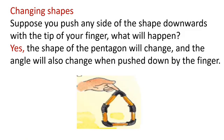Changing shapes. Make a pentagon, that is a five-sided polygon, using five matchsticks or ice cream sticks. Now, push any side of the shape downwards with the tip of your finger. What do you think will happen? Yes, the shape of the pentagon will change and the angle of the pentagon will also change when pushed down by the finger.